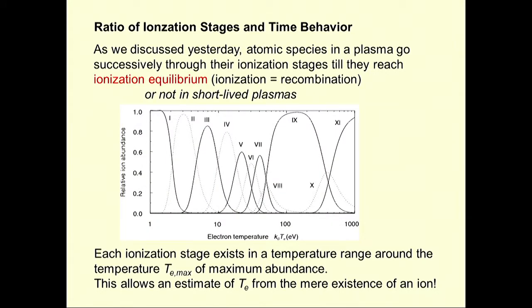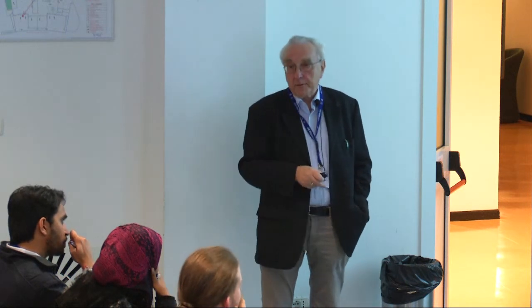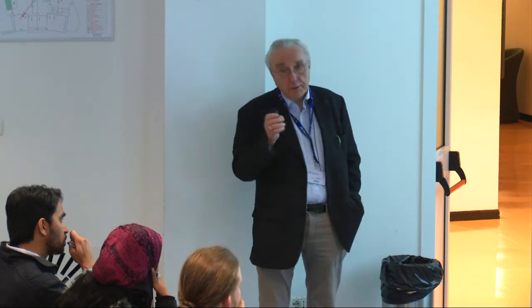Then comes the ionization equilibrium. When you are in equilibrium, if you have mostly lines from, say, neon 4+, then you know you have that ionization state and you have a rough temperature. Just by looking at which strong lines are present, you know which ionization state exists and you have a rough temperature estimate. This is not too bad as an estimate.